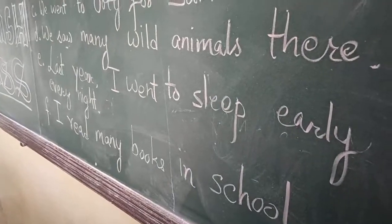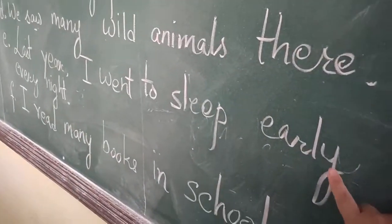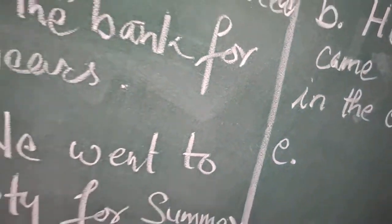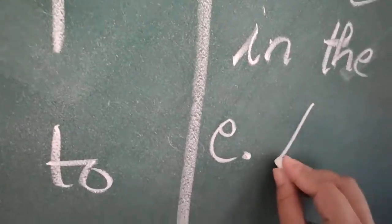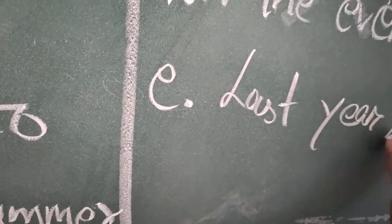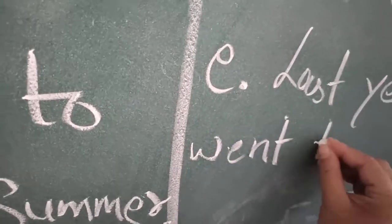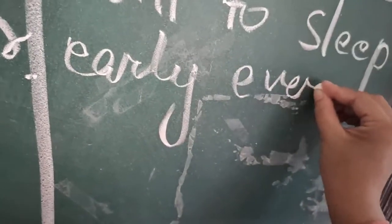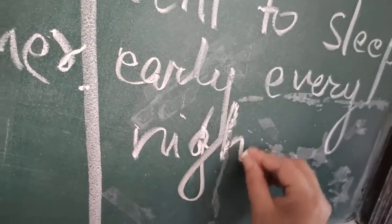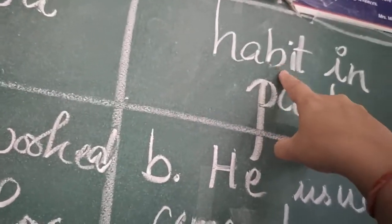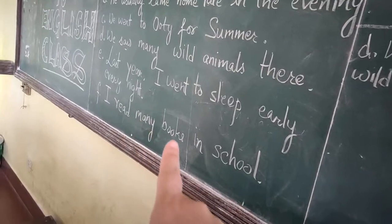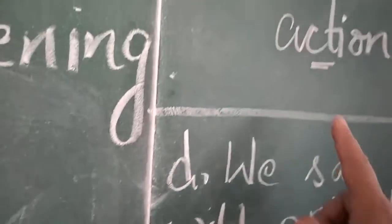Sentence E: 'Last year I went to sleep early every night.' This sentence is also indicating habit in the past, because it is indicating a habit or routine. So sentence E goes in the 'Habit in past' column. Sentence F: 'I read many books in school.' Read is representing an action in the past, so number F goes in the 'Action in past' column.